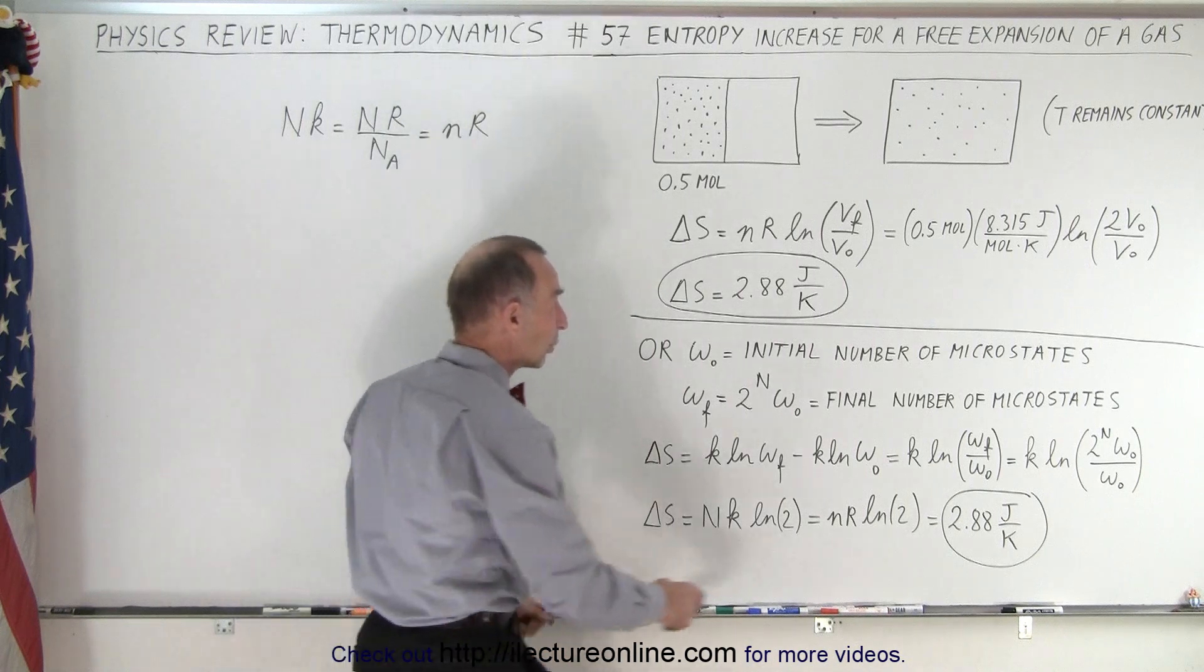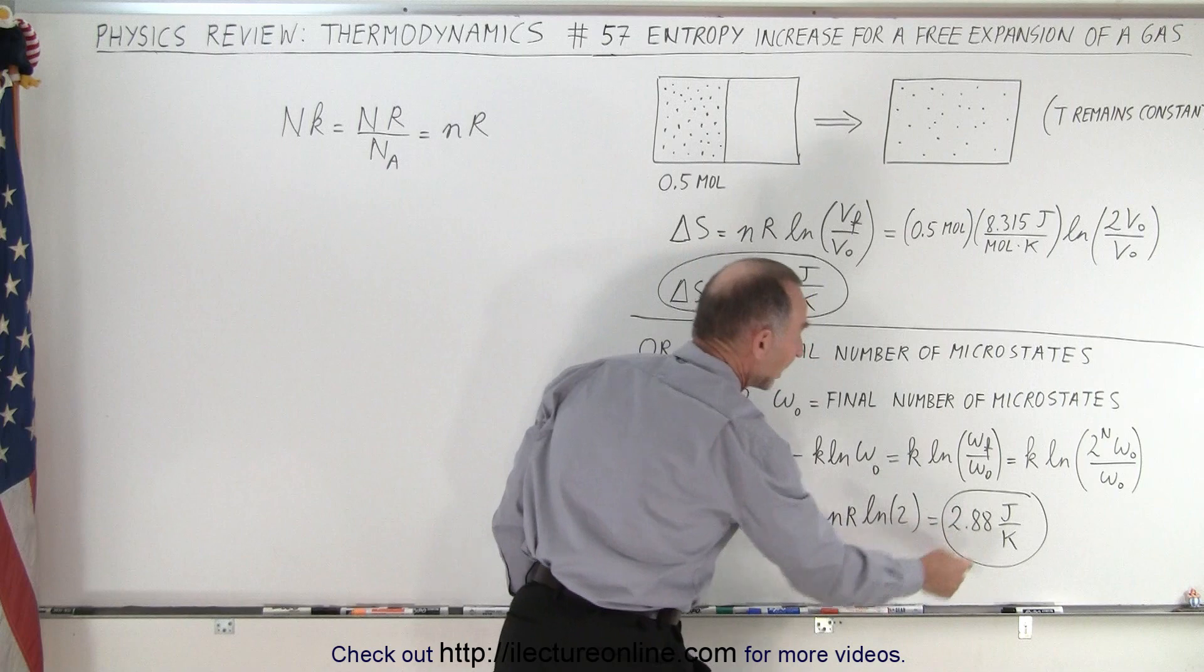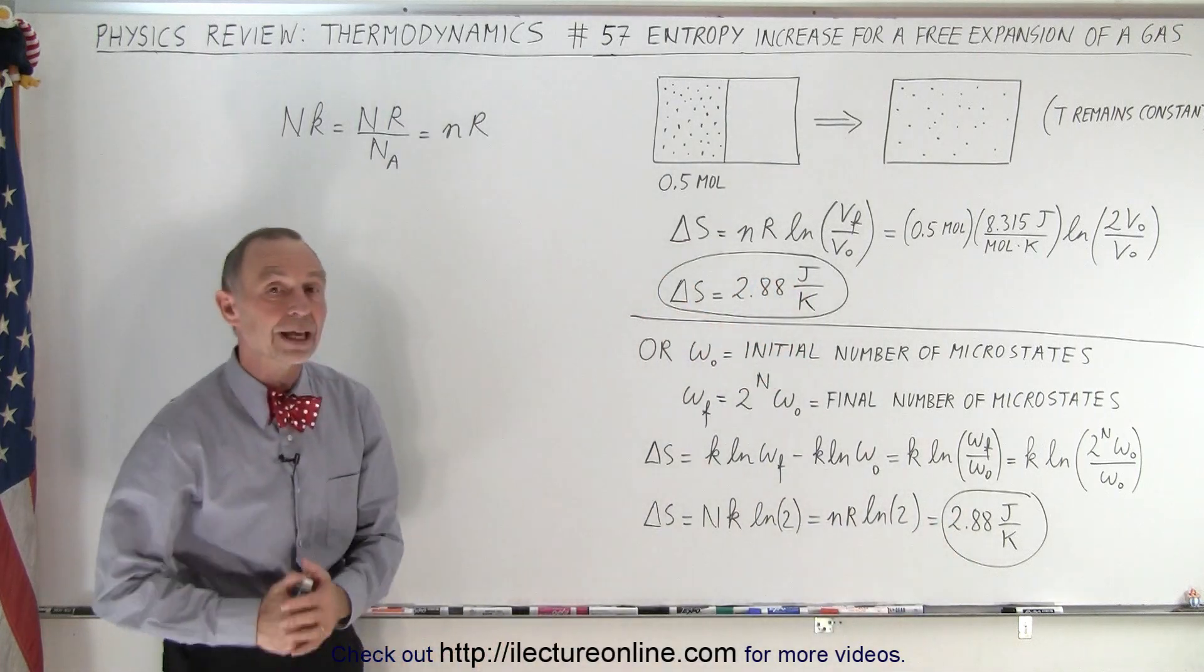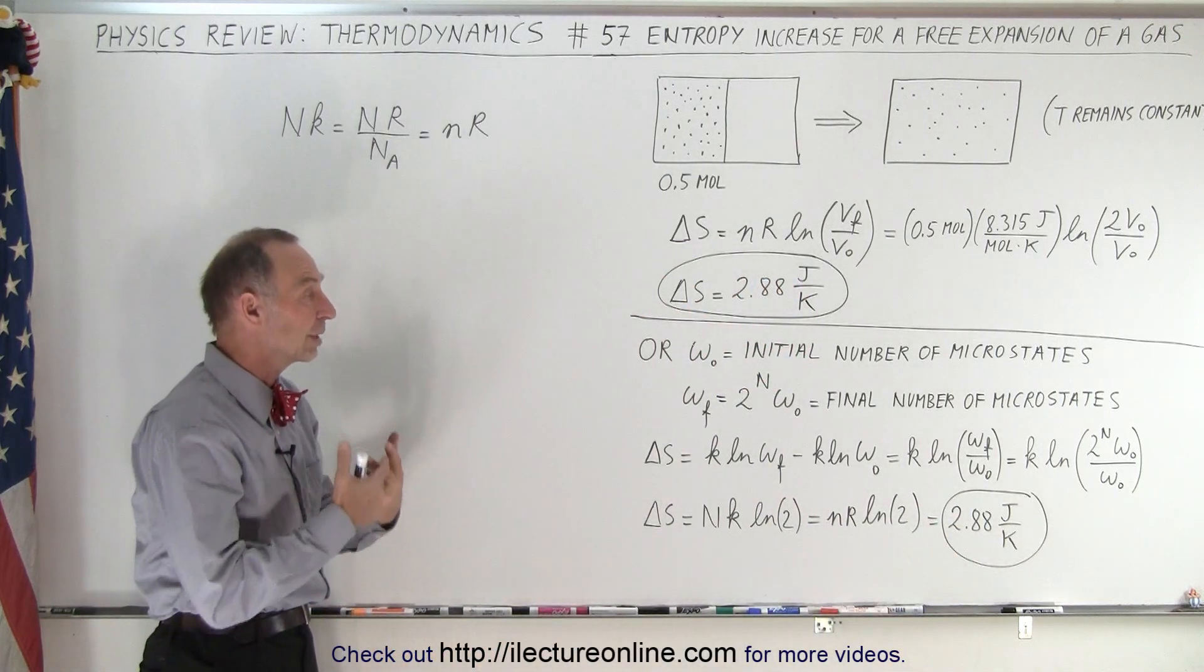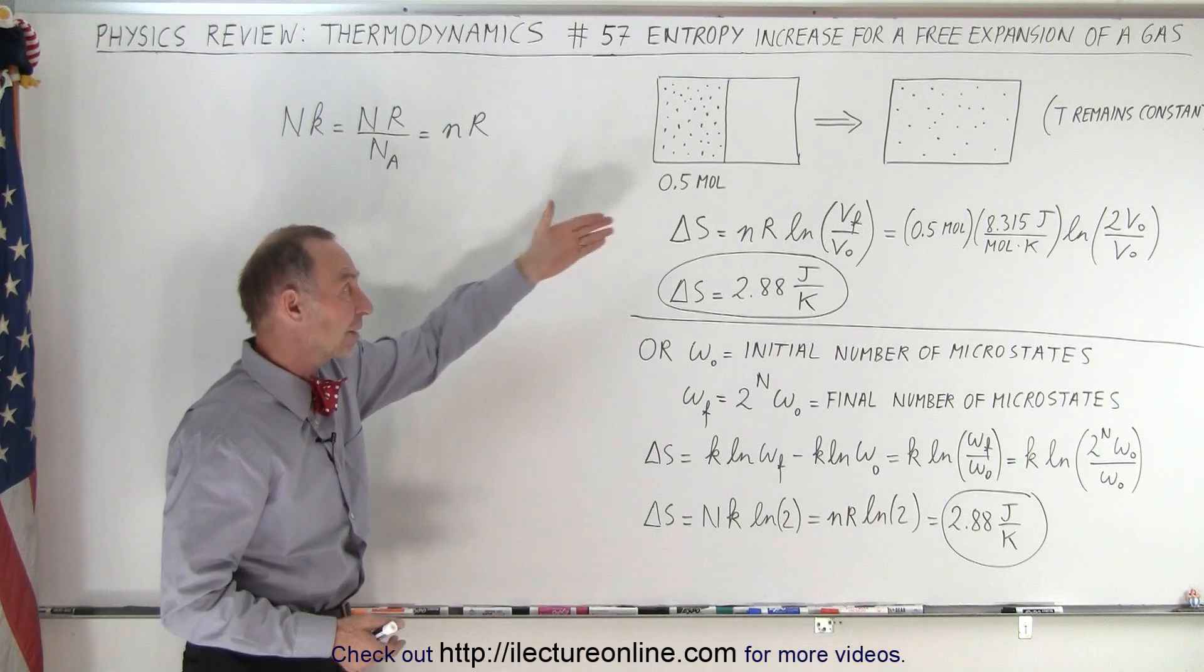And then notice that the equation is exactly the same as what we had before. We plug in the numbers and we again get 2.88 joules per kelvin. So notice that we're able to calculate the change in entropy in the old-fashioned way simply using the gas laws or using the new Boltzmann's equation.